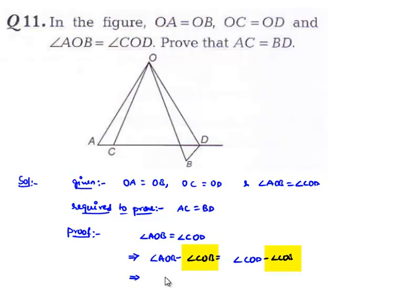Then we get that angle AOB minus angle COB is angle AOC, which is equal to angle COD minus angle COB, which is angle BOD.